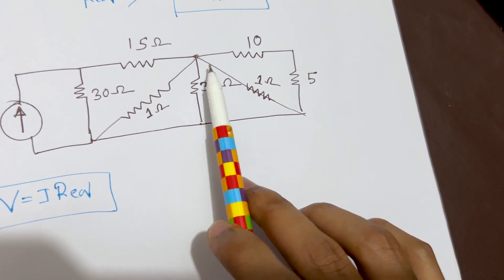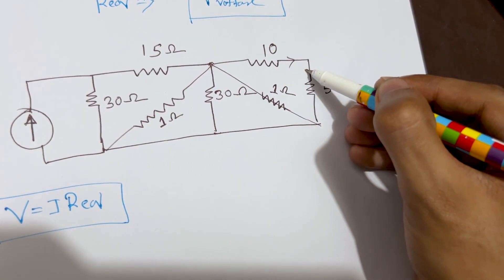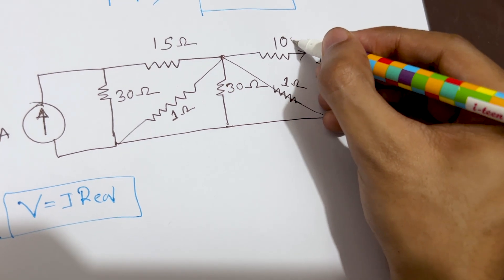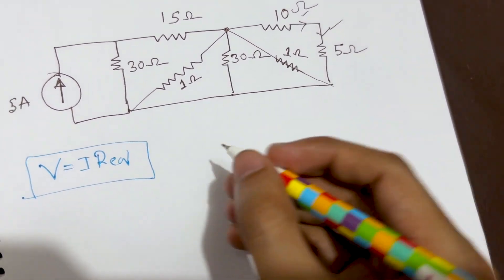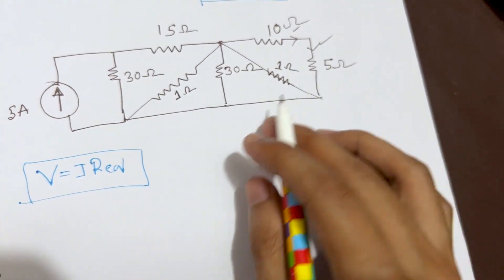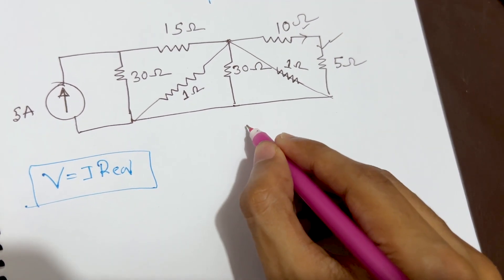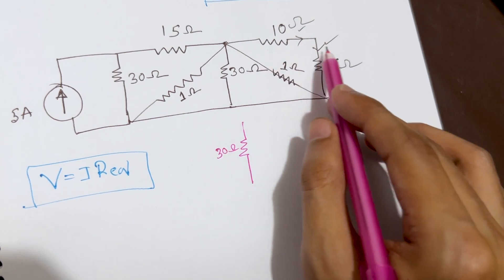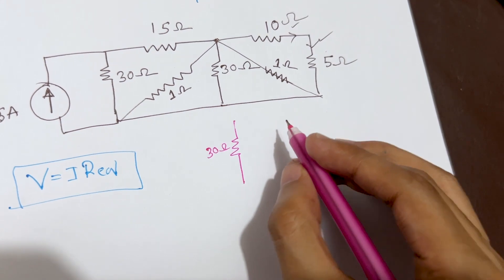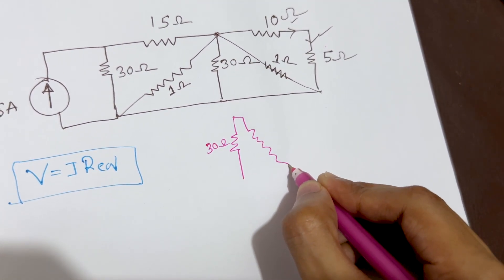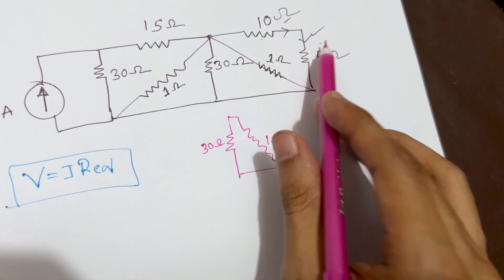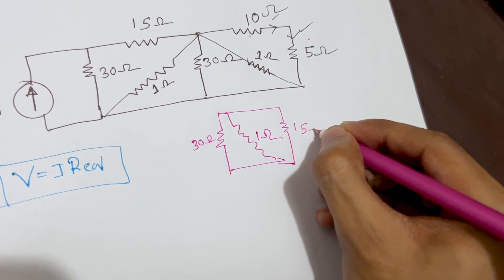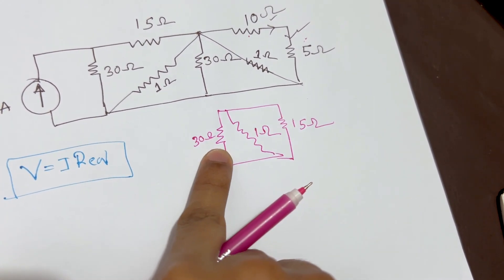At this point, the current is flowing from three different directions. Two of these branches carry the same current, so they are in series — one is a 5 ohm resistor and one is a 10 ohm resistor. Since 10 and 5 are in series, we simply add them: 10 + 5 = 15 ohm.